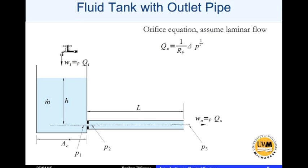Q_0, which is the volume flow rate through the orifice, is 1/(R_ρ) times Δp^(1/α). α is 1, and Δp is the pressure differential, which is p₁ minus p₂. So we can write Q_0 = 1/R